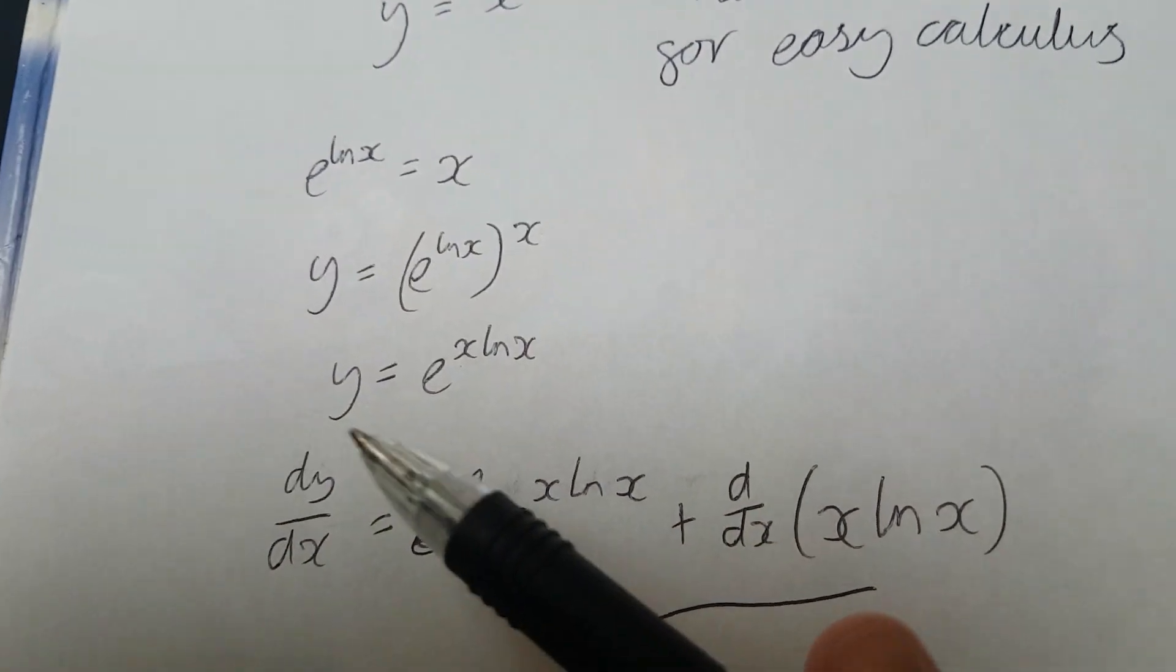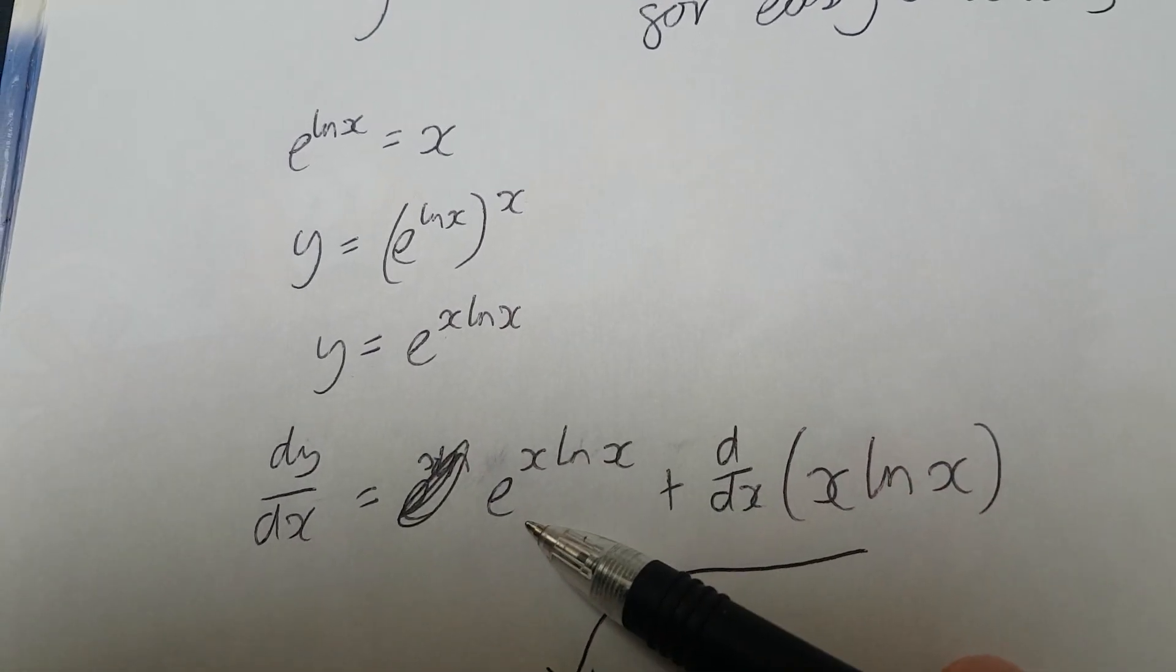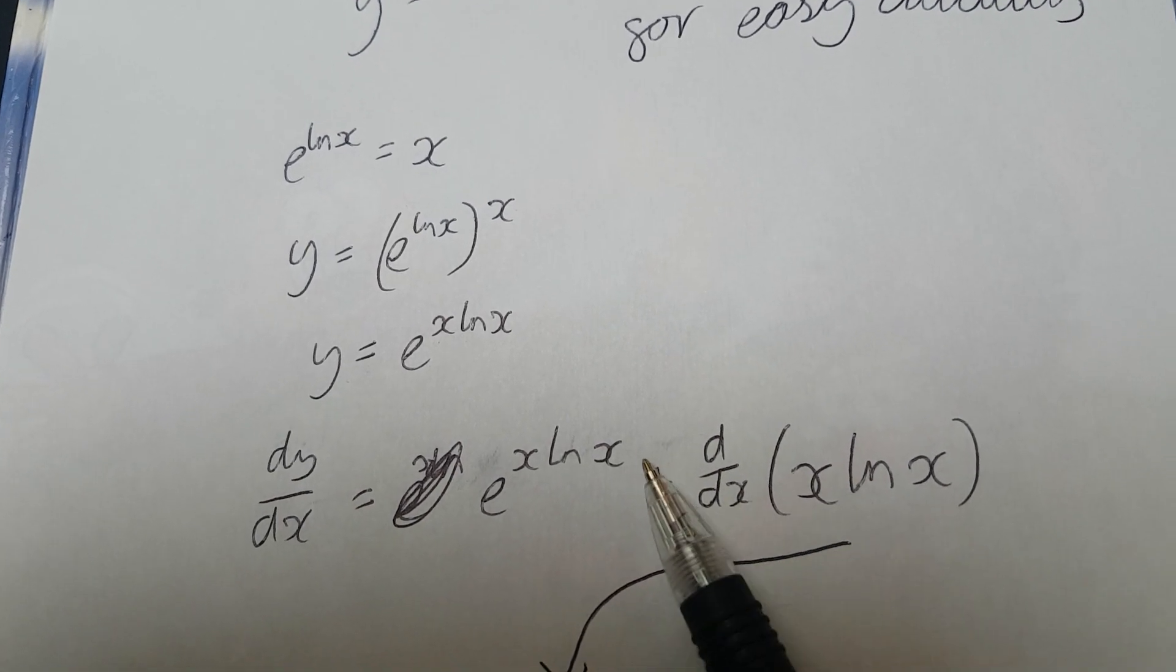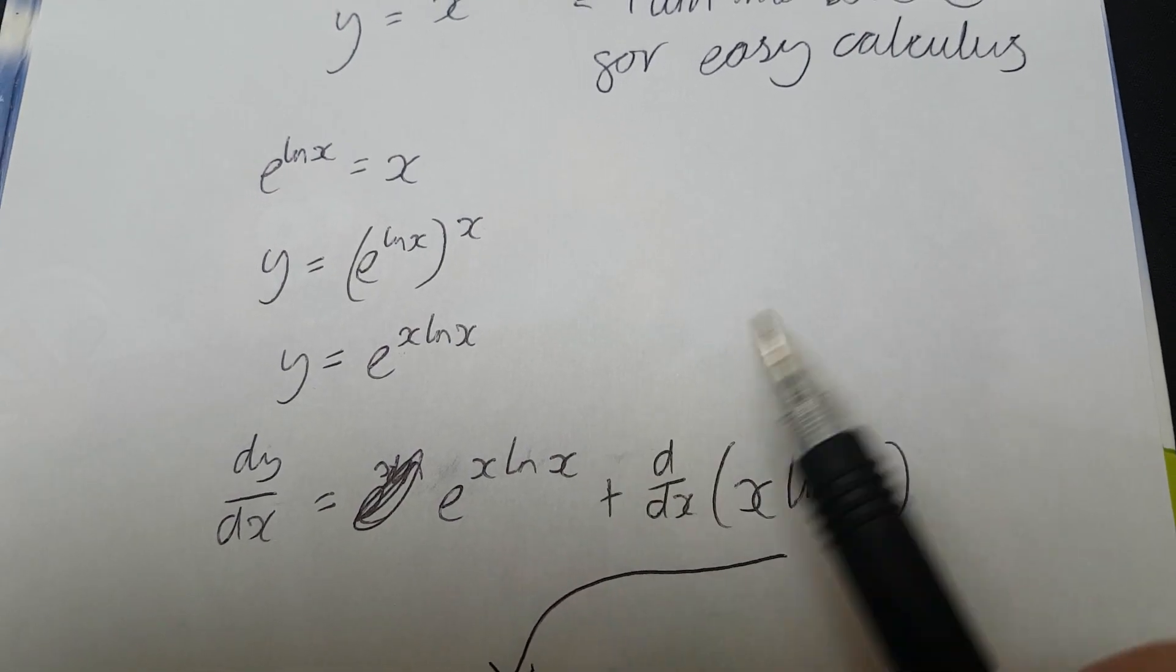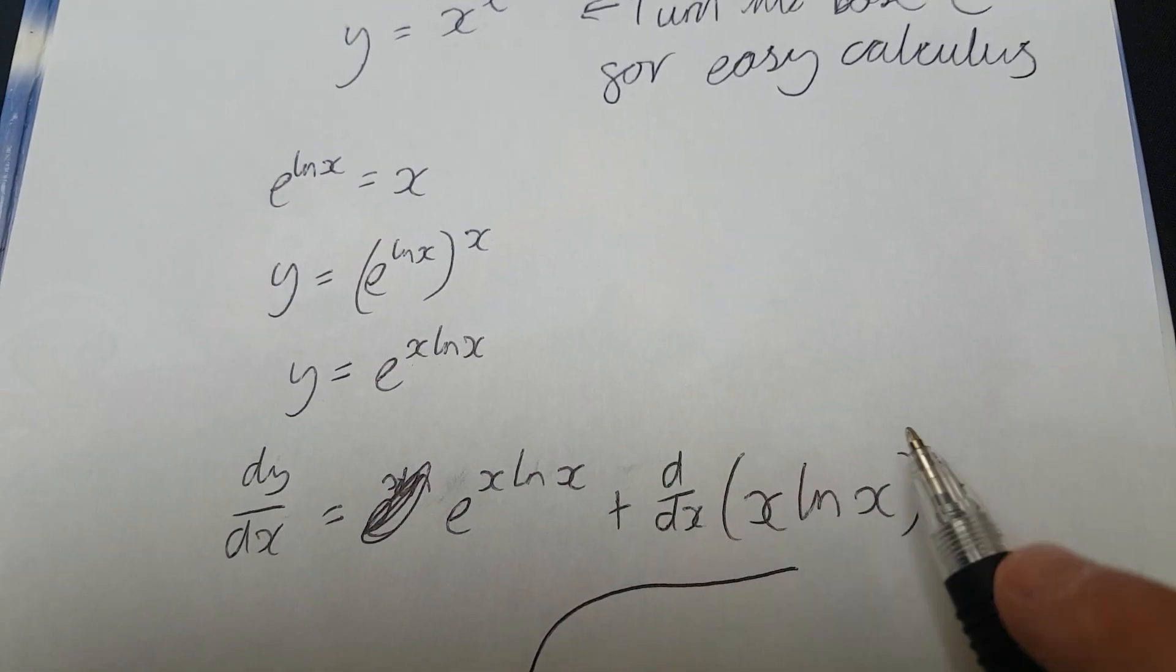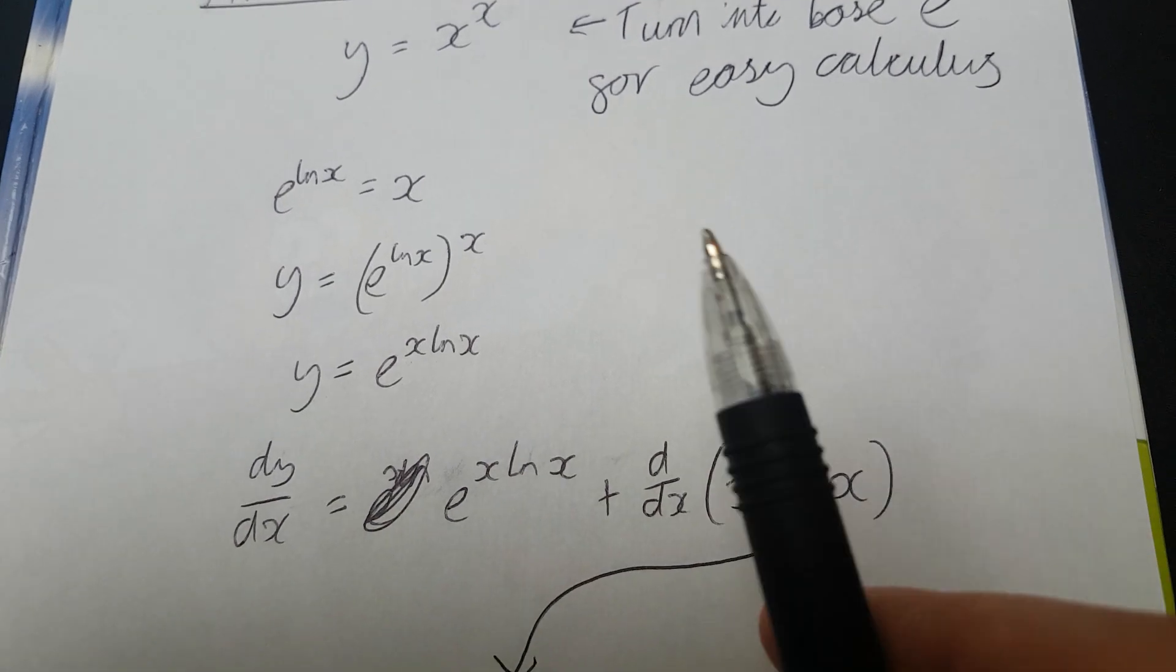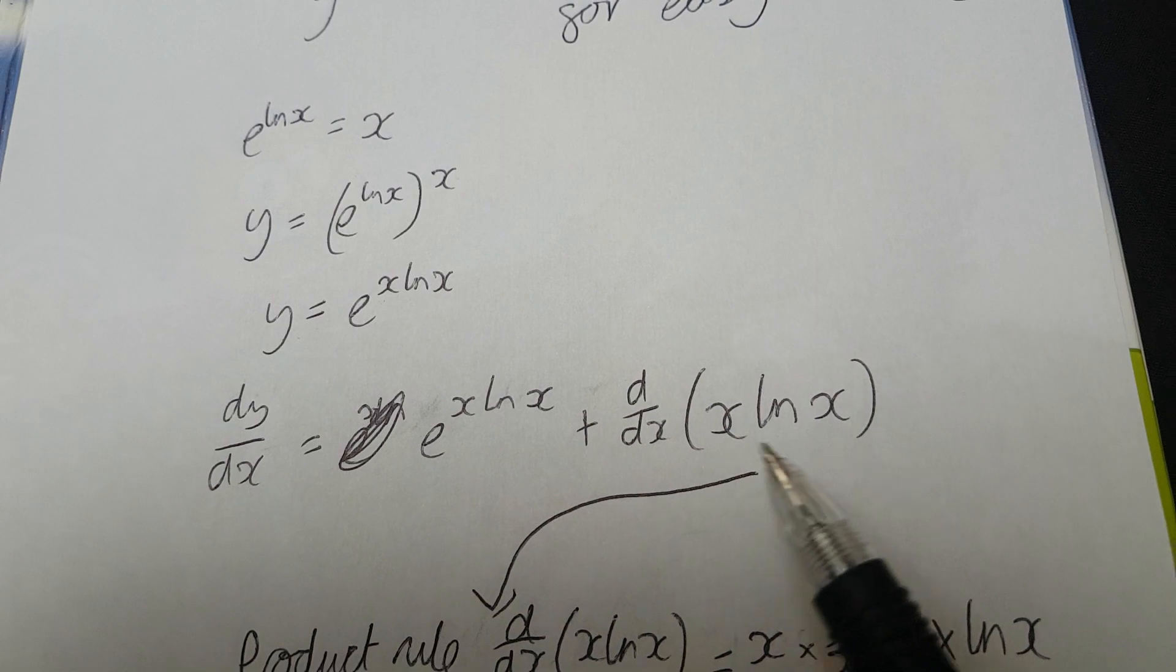So, the derivative of this is this times the derivative of whatever there, that's supposed to be a multiplication symbol. I apologize, it looks really bad, doesn't it? Anyway, this is a multiplication symbol. And you multiply by the derivative of whatever's up here. So if it was e to the x squared, you would have 2x e to the x squared, that kind of thing.